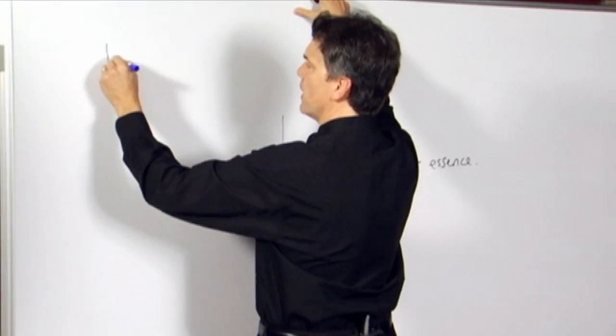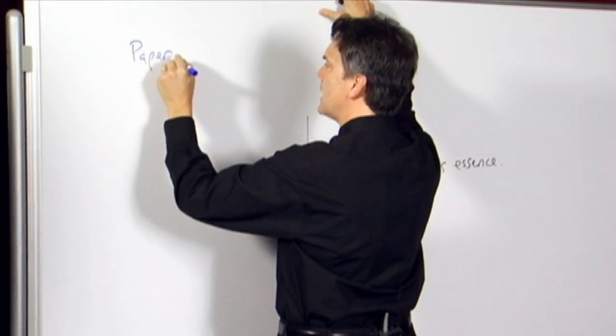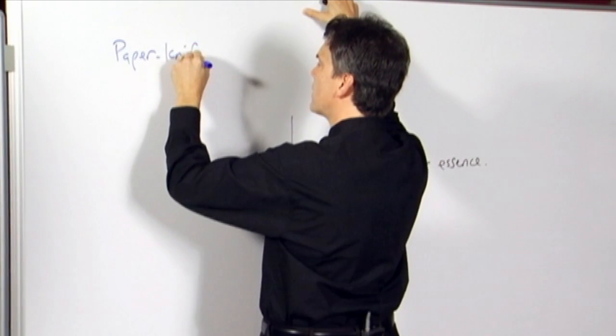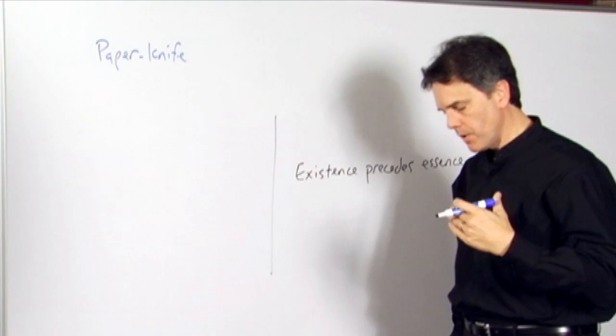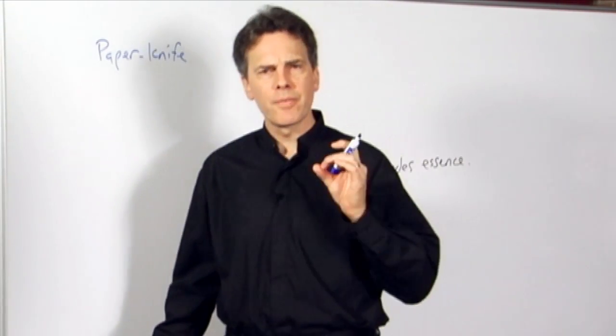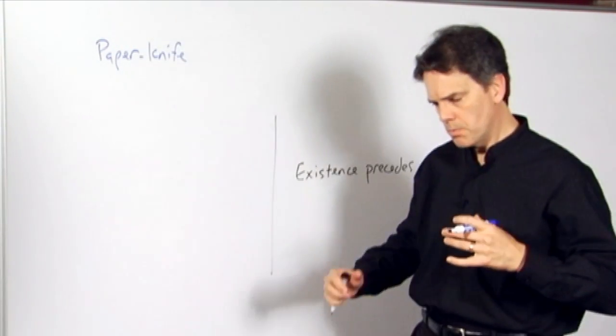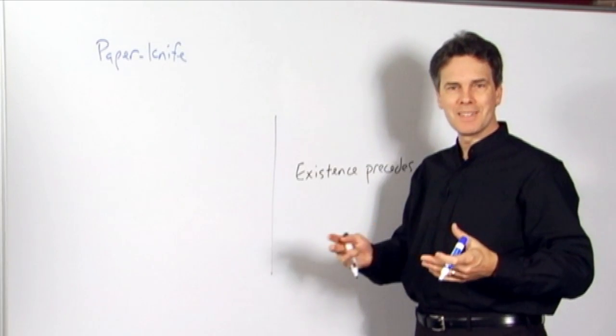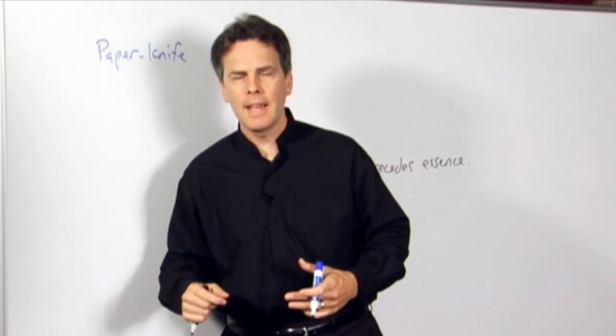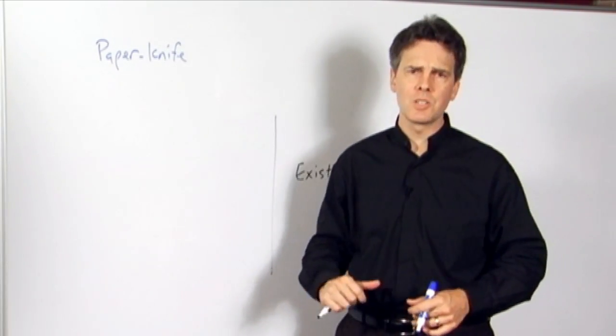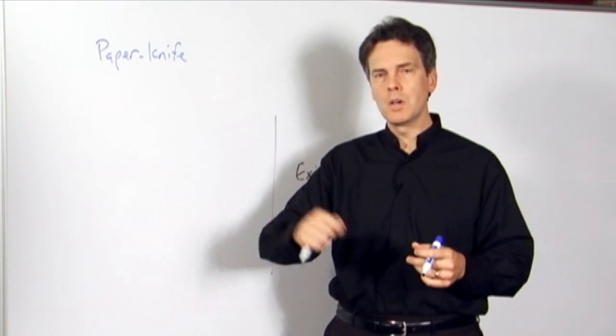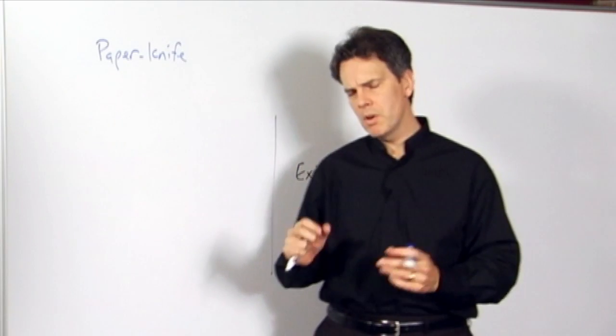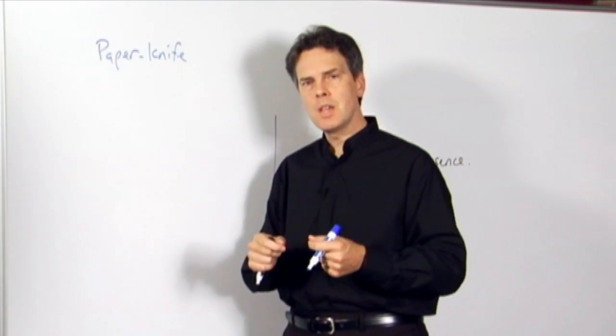Think about a paper knife. We're trying to explain the existence of the paper knife, what it is to be a paper knife, why the paper knife exists, what it's for, and so forth. And Sartre then makes a point to say, the first thing that happened is presumably somebody had a book that came from the printer and all the pages were not yet cut. And he said, wouldn't it be great if I had some sort of implement that I could use to cut the pages so I can read my book?